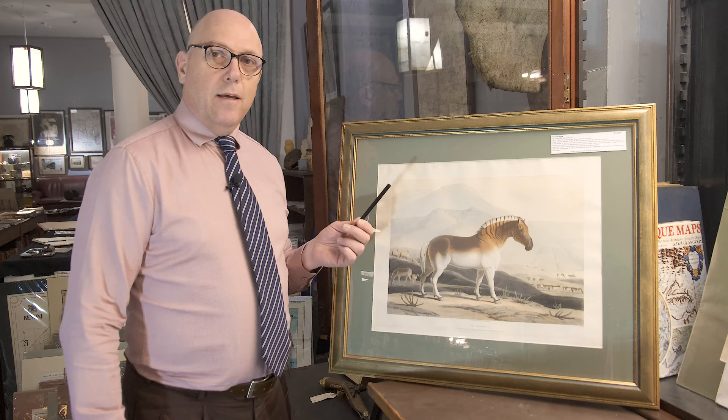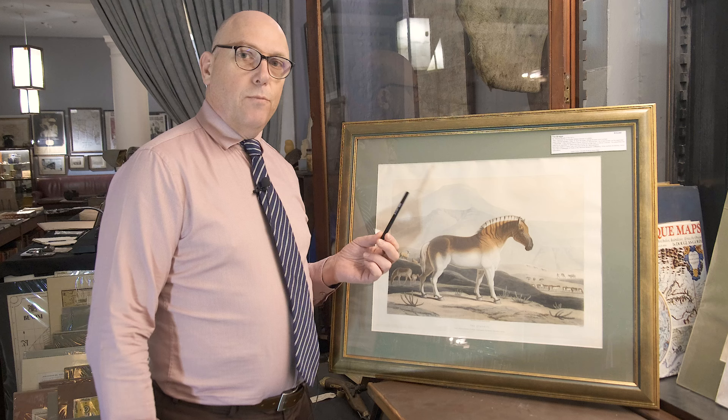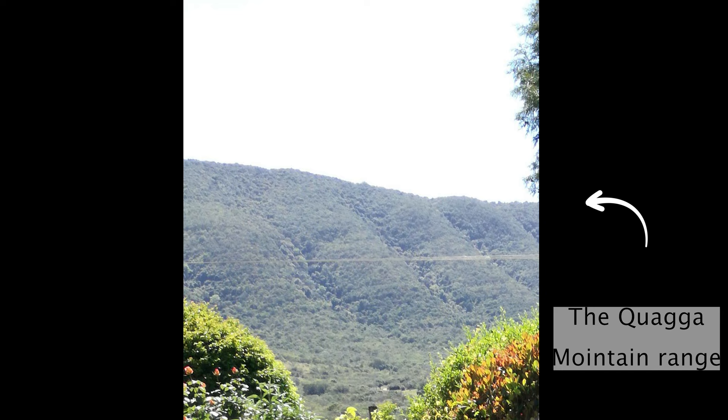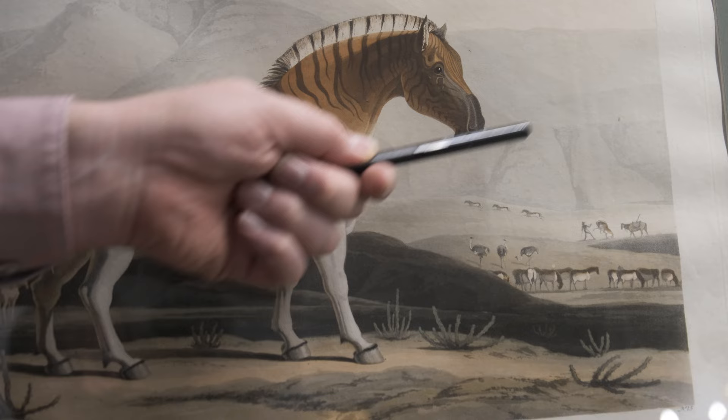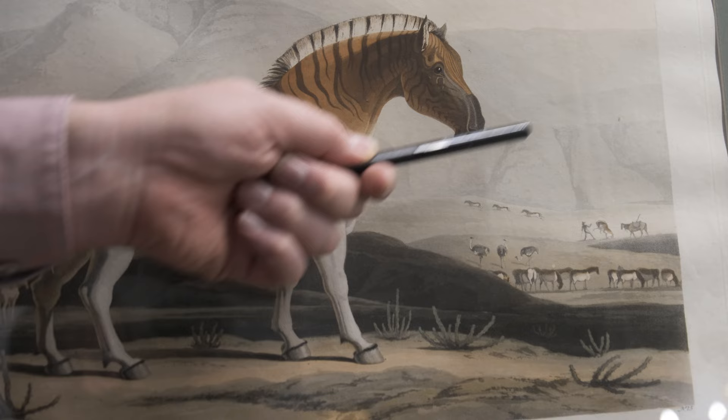The most interesting reference is that there's a mountain range behind the town of Bedford called the Quagga Mountain Range. It is named as such because as the sun is setting, you can actually see these very ridges. Something like this would sell for 15,000 rand.